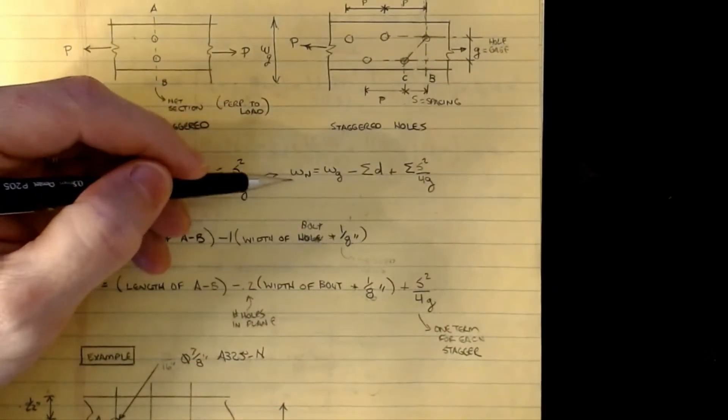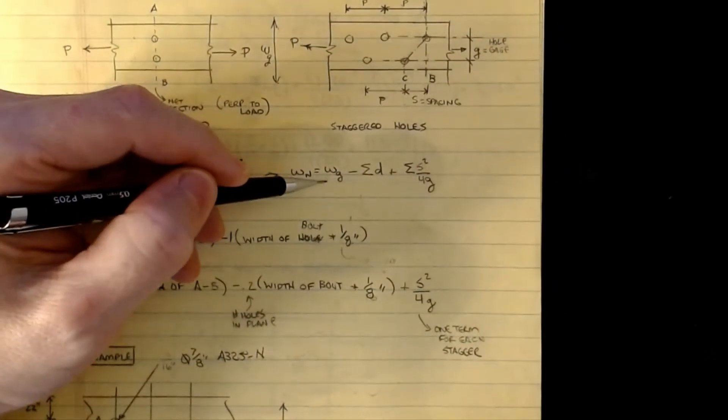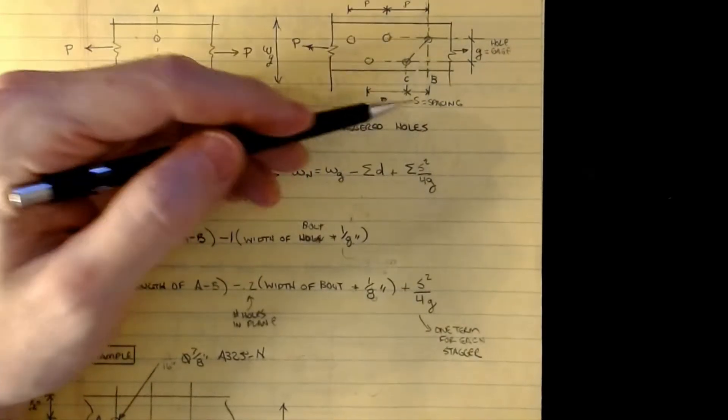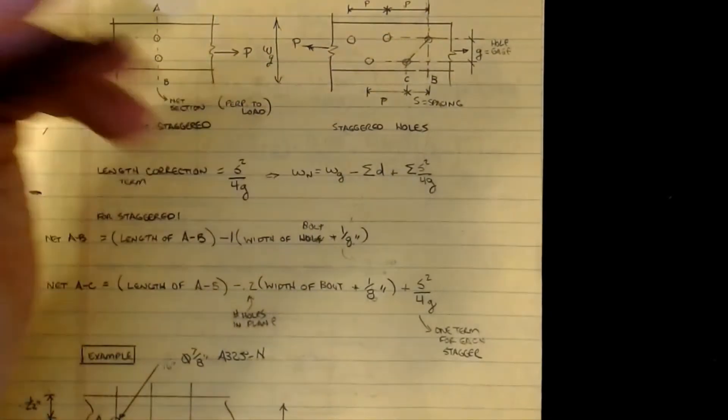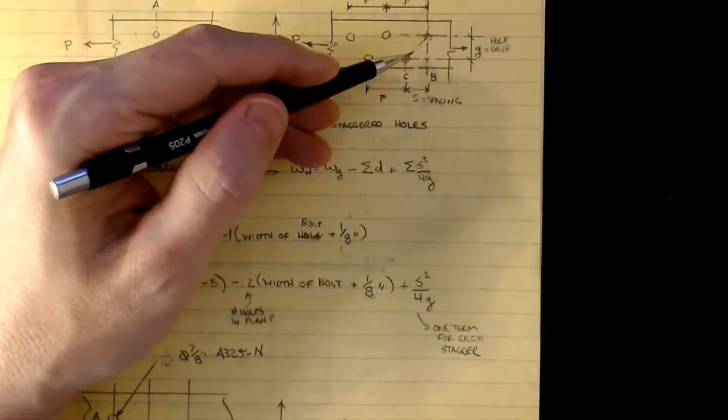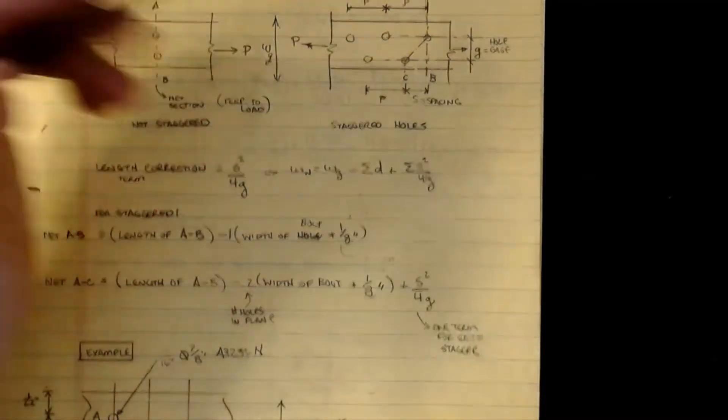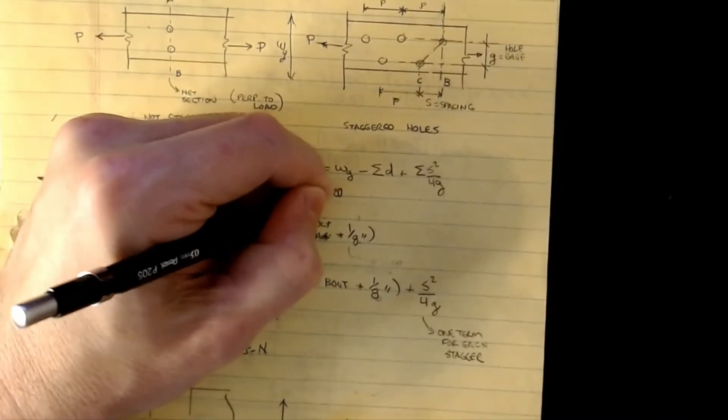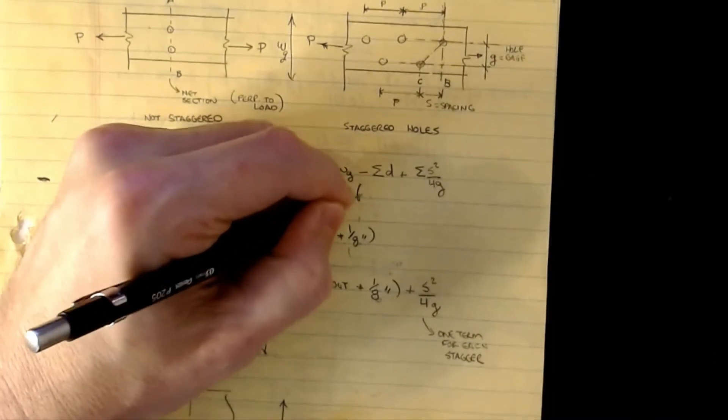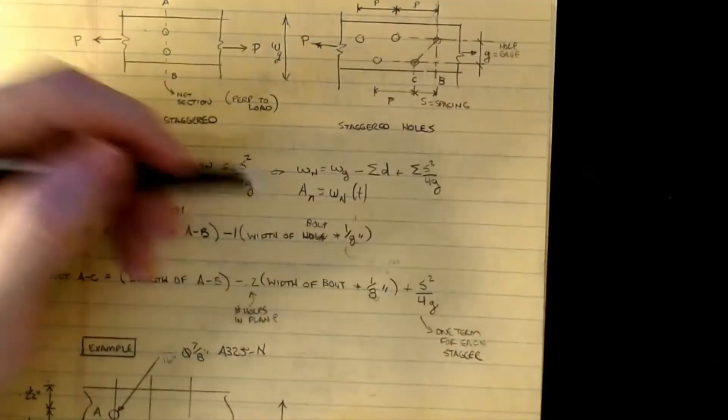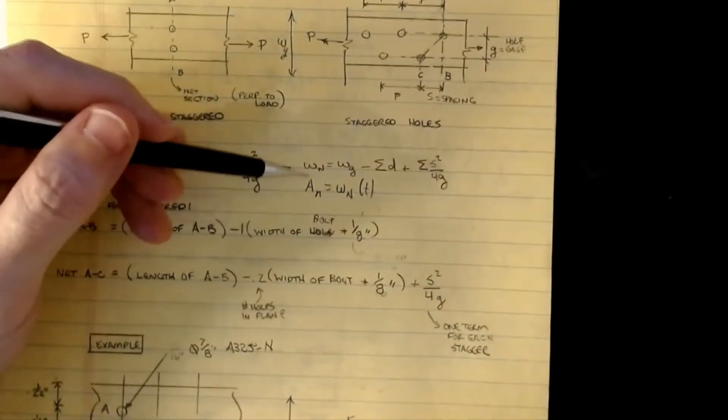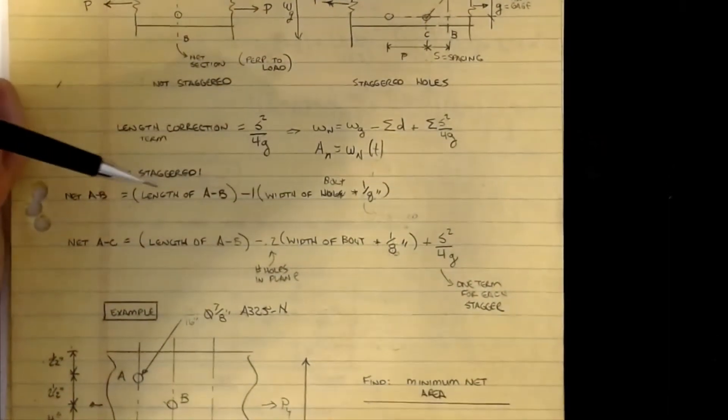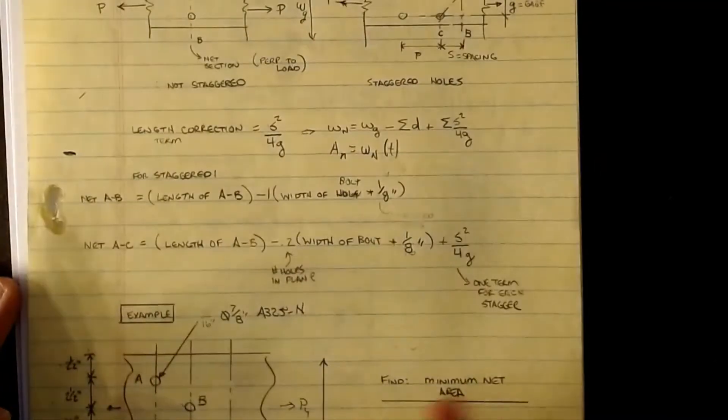That's why we make this correction for staggered holes. They add a correction term that accounts for the difference in length, which is S squared over 4G. Our net width is the gross width minus the sum of all the diameter of holes contained on the plane you're looking at, plus the sum of all the staggers on the path: WN = WG - Σ(diameter) + Σ(S²/4G). We have one stagger here but two holes on plane A-C.